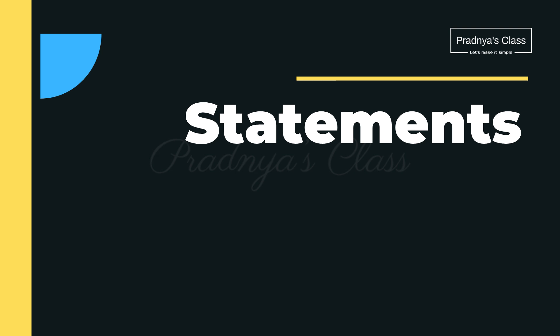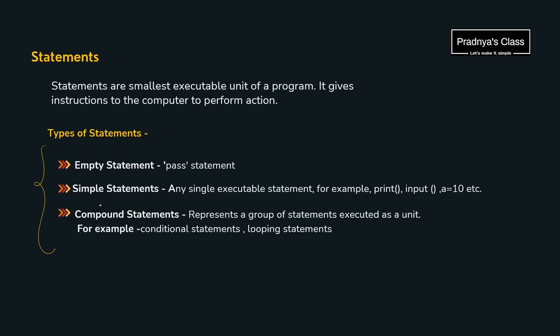We will continue our discussion with the types of statements. The first is the empty statement — pass is an empty statement in Python. According to Python syntax we must write some code, but if at a given moment there is no code to write, we can use the pass statement. The second type is the simple statement, also called a single statement — like print, input, or a = 10. The third is the compound statement, which is a group of statements, like conditional and looping statements.